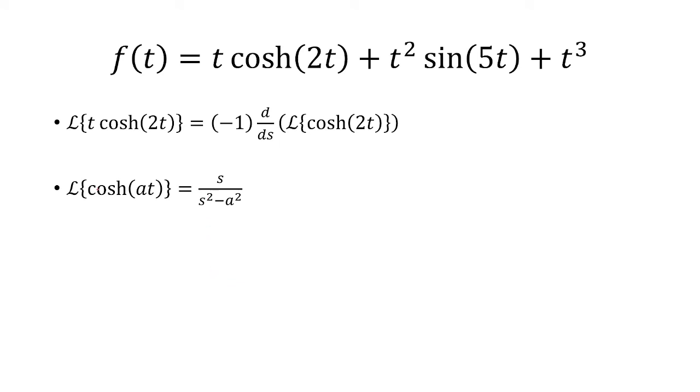Recall that the Laplace transform of cosh of at is s over s squared minus a squared. In this case, a is 2, so we have s over s squared minus 4.